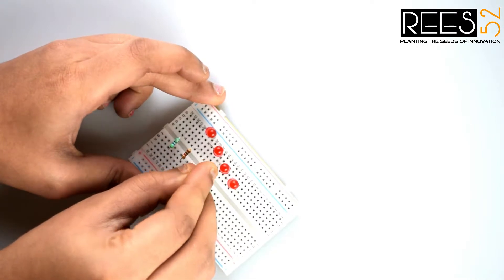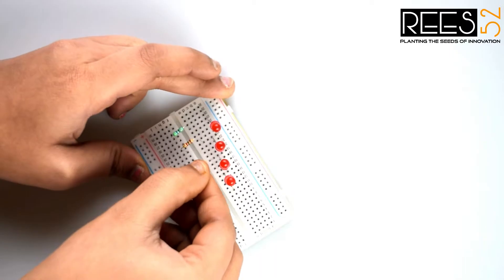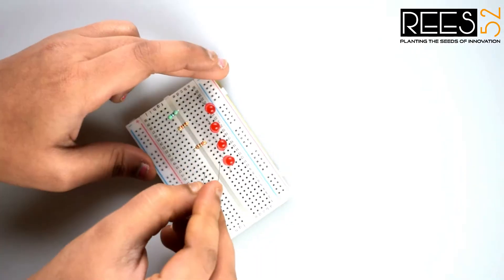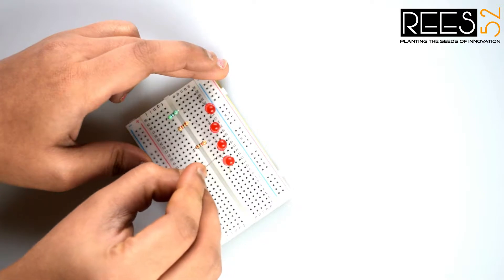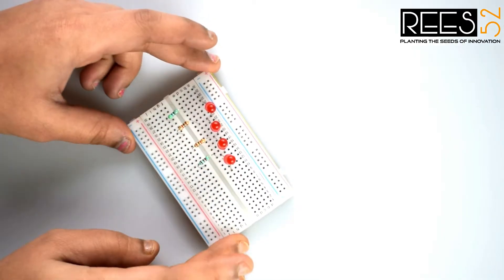Again connect a 1 kilo ohm resistor to the joint point of second and third LED. Then connect a 2.2 kilo ohm resistor to the joint of third and fourth LED.